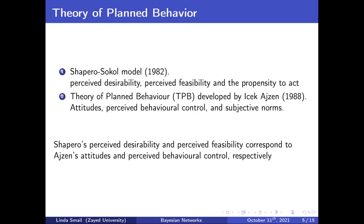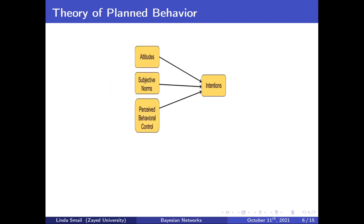In Ajzen's Theory of Planned Behavior, intention is affected by desirability, feasibility, and what we call self-efficacy or perceived behavioral control. Essentially, there's no big difference between Shapero and the TPB: desirability in Shapero is exactly attitude in TPB; subjective norms correspond to feasibility in Shapero. Self-efficacy is present in TPB but not in the Shapero model. A lot of research uses this model, combining it with structural equation models to add more factors.